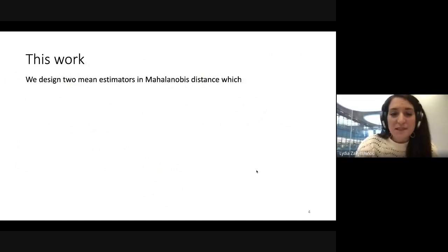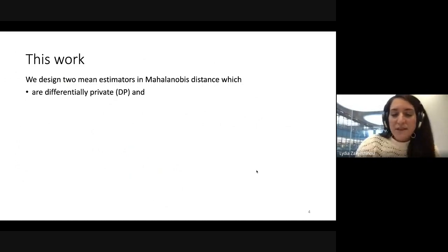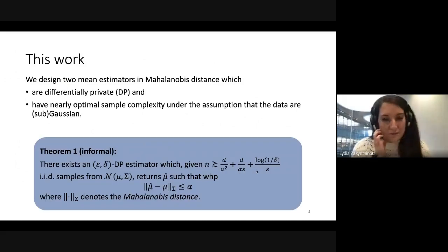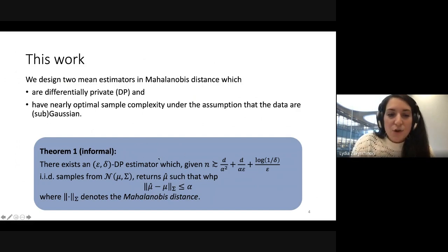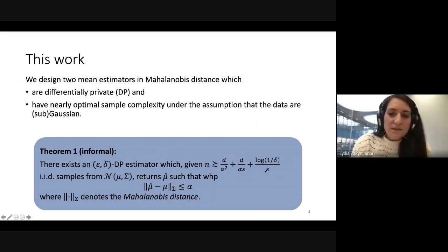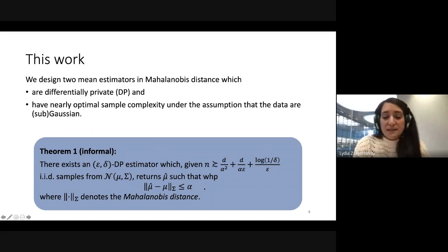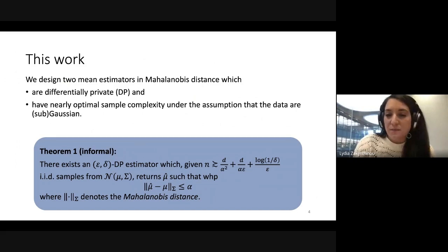In this paper, we design two mean estimators which have small Mahalanobis distance from the mean, are differentially private, and have nearly optimal sample complexity under the assumption that the data are Gaussian. Our result says there is an epsilon-delta differentially private estimator that, given d over alpha squared plus d over alpha epsilon samples from a Gaussian distribution, returns an estimator with small Mahalanobis distance from the mean, where alpha is the accuracy, epsilon and delta are privacy parameters, and d is the dimension.